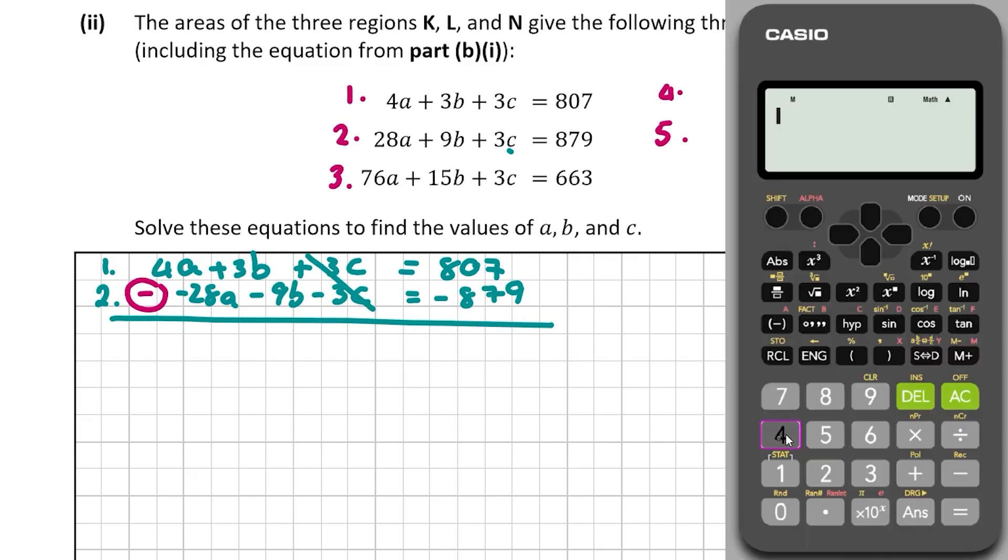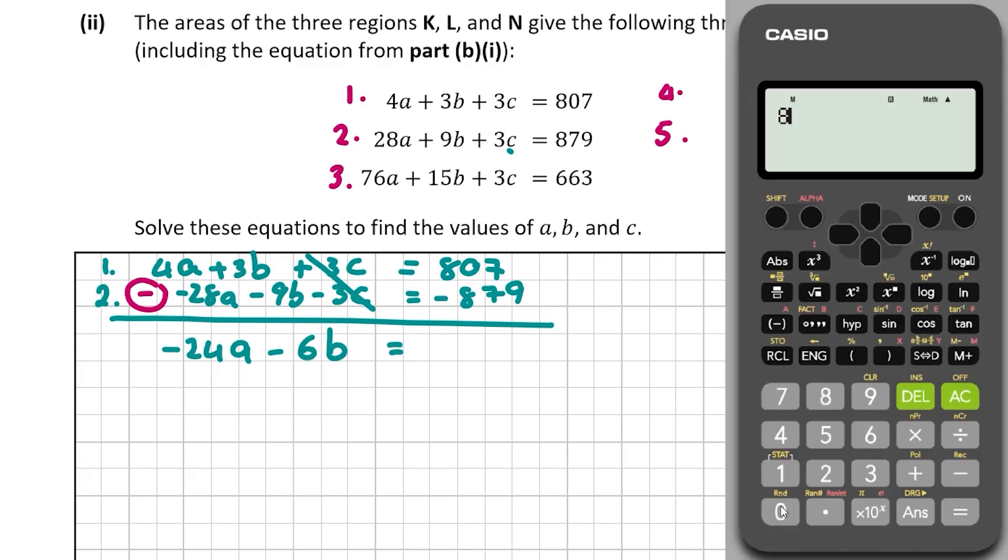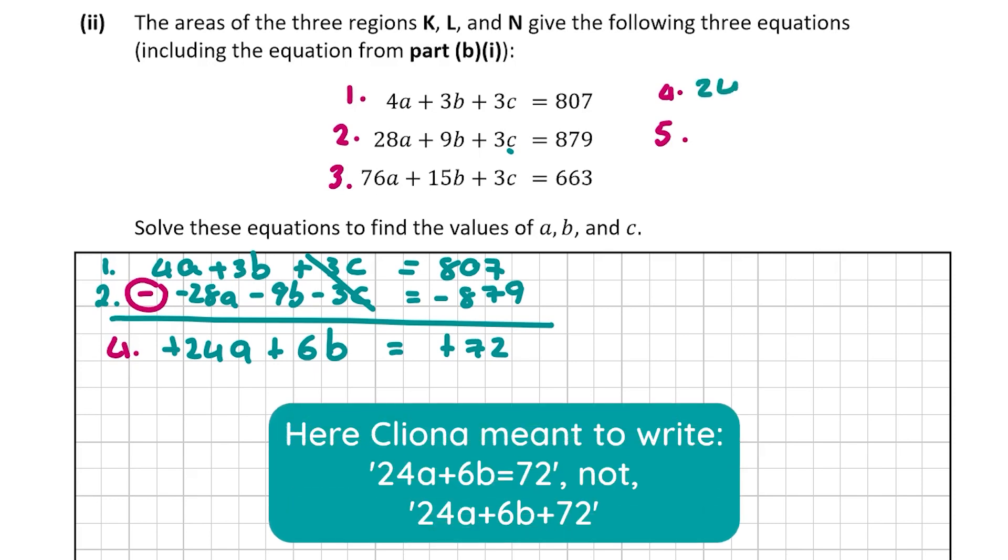So it's going to be -28A - 9B - 3C = -879. So we can get rid of these. 4A - 28A gives us -24A. 3B - 9B is -6B, and that equals 807 - 879 which is -72. So this is equation number 4 and I'm going to write it up here as well. I'm actually going to change the sign right across just to make it easier for me. So it's 24A + 6B = 72.